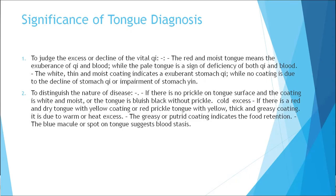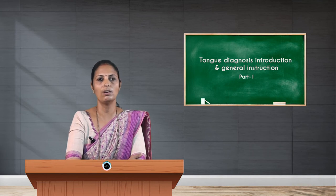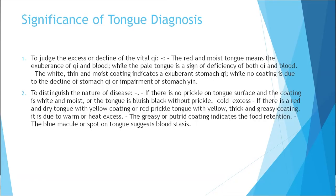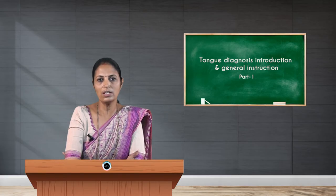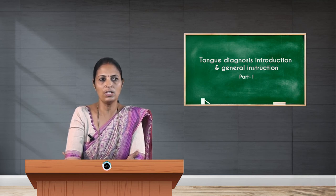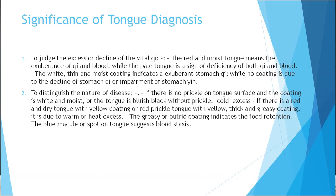Overall, the tongue can reveal the state of the viscera — that is, the internal organs — chi, blood, yin and yang, pathogenic factors, and the healthy chi, as well as the progress of disease. The tongue helps to judge the excess or decline of vital chi. A red and moist tongue indicates excess of chi and blood, while a pale tongue is a sign of deficiency of both chi and blood. A white, thin, and moist coating indicates excess of stomach chi, while no coating at all indicates a decline of the stomach.